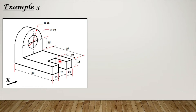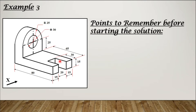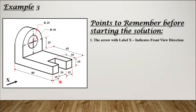Now let's take the example. As a standard practice, there are always some points to understand before starting the solution. First: the arrow with the label X always indicates the front view direction. In this question, the arrow with label X shows the front view direction, so this will be our length, this will be the width, and the vertical dimension will be the height.